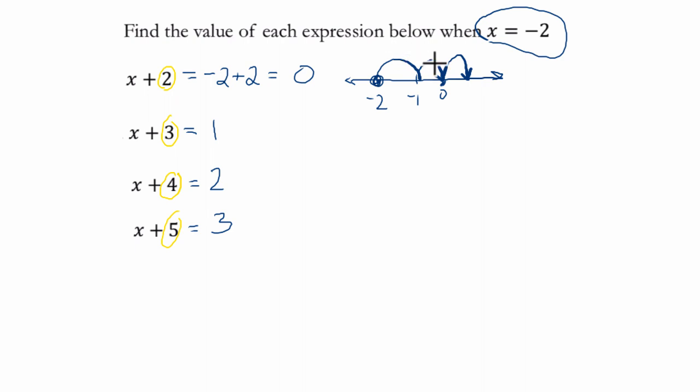So the second expression, we hop 3 times from negative 2, that goes up to 1. Then we hop up 4 times from negative 2, and that gets us to 2. And then we hop up 5 times from negative 2, 5 hops gets us to 3. You can see here we have 1, 2, 3, 4, 5 hops.